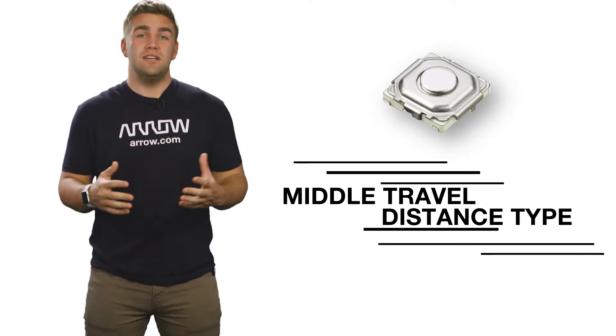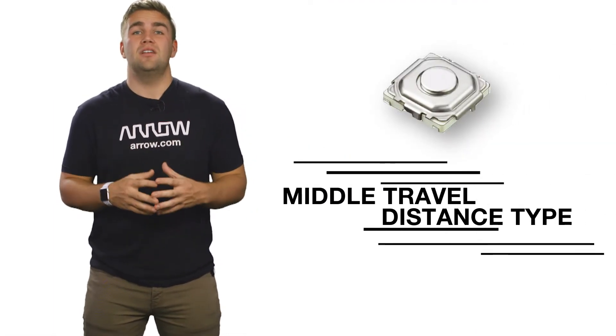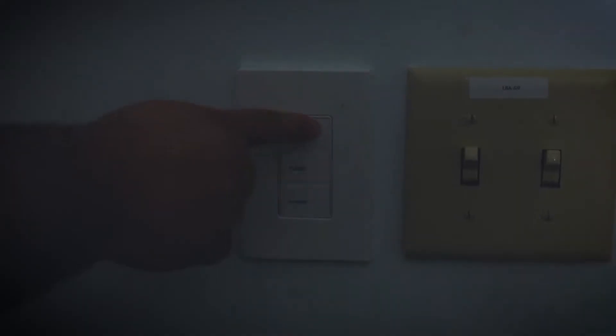Home appliances or lighting control applications benefit from Panasonic's middle travel distance types that offer ideal touch and sensitivity for electronics that you'd find around the home.